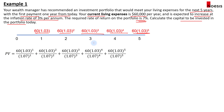You could calculate each cash flow one by one, but imagine if this is 10 or 15 years — it would be quite a hassle to compute. For sake of simplicity, if you calculate it out, you get $267,986 as the total PV for the five years.